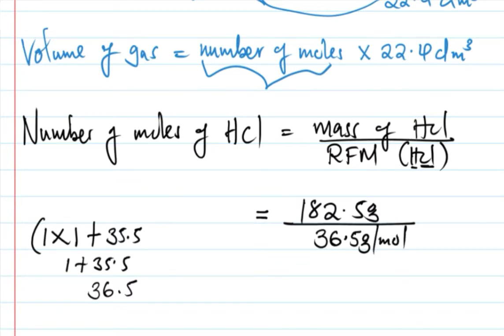182.5 divided by 36.5, and the answer is 5. The grams cancel and we're left with the number of moles, which is 5 moles.